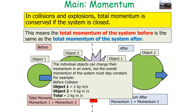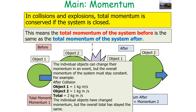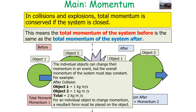For example, if before the collision object one had a momentum of 2 kg·m/s and object two had a momentum of 0 kg·m/s, this gives a total momentum of 2 kg·m/s. After the collision the total must still be 2 kg·m/s — now object one has 1 kg·m/s and object two has 1 kg·m/s. So while the individual objects have changed momentum, the overall total has stayed the same.